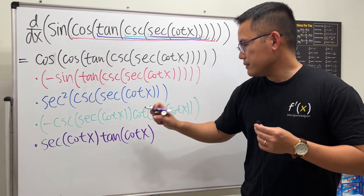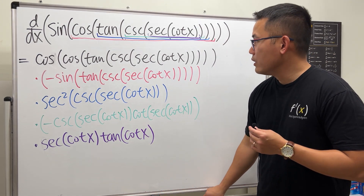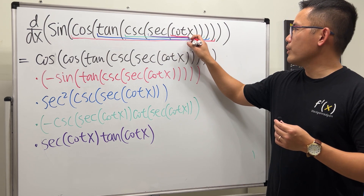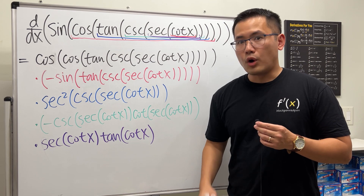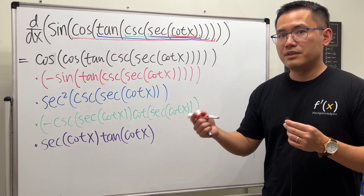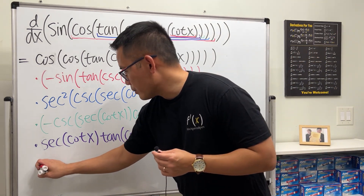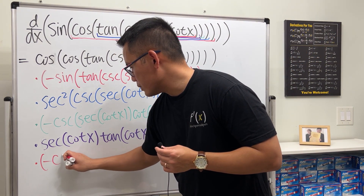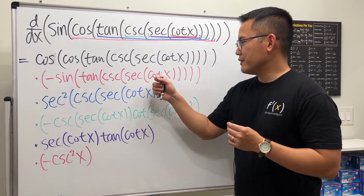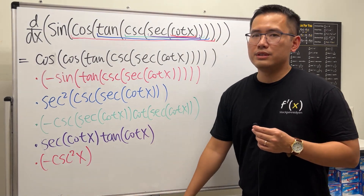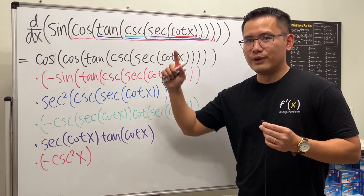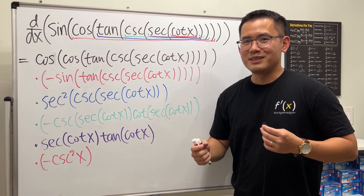Finally, in red, we differentiate the last layer: cotangent of x. It's a cofunction, so the derivative is negative, giving us negative cosecant squared of x. We multiply by that, and we're done — we used the chain rule five times. That's what the derivative of all the trig functions composed together looks like.